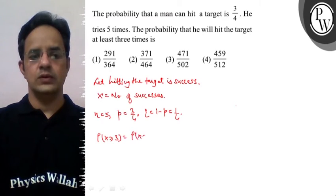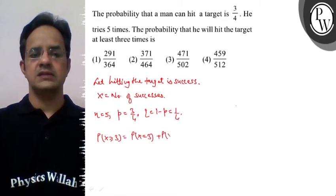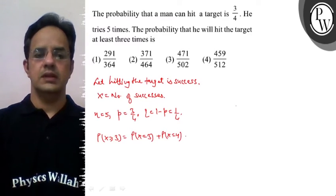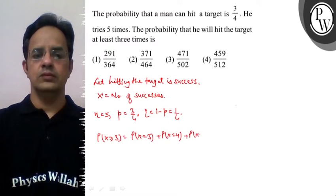Which can be written as P(X=3) + P(X=4) + P(X=5).